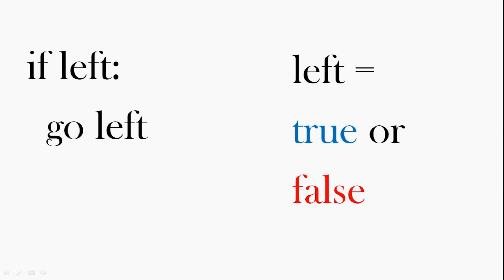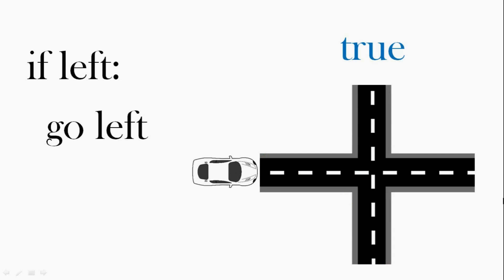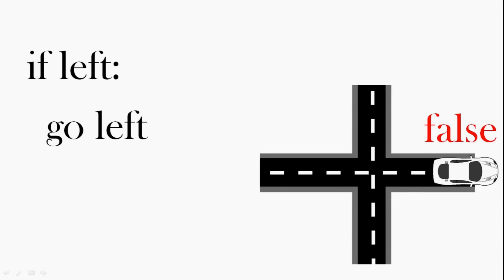So here's an example. If left, go left. If it's true you want to go left, then go left. If it's false, you don't want to go left and don't go left. So let's have a look at that. Here we've got a car, and when it's true, we want to go left. The car turns left. What happens when it's false? The car doesn't go left.